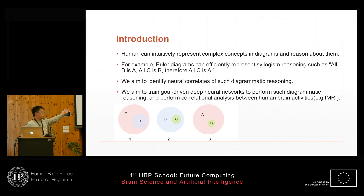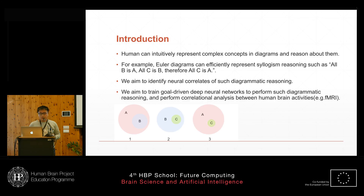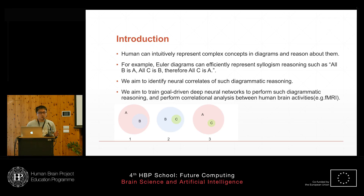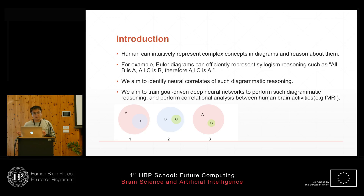This conclusion can be represented in an Euler diagram as a ray diagram. For my PhD project, I aim to train a deep neural network that performs this diagrammatic reasoning, and also to correlate it with real human brain activities measured using fMRI.